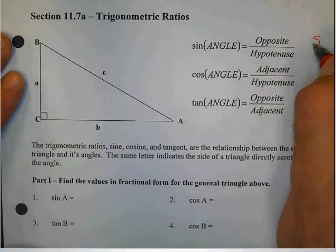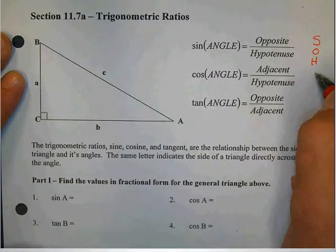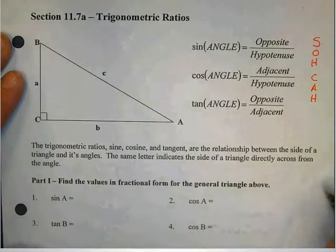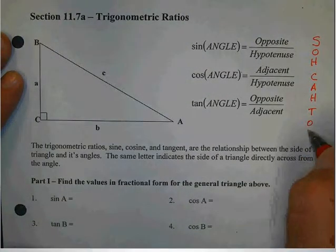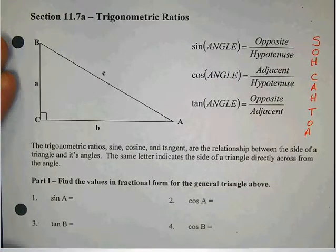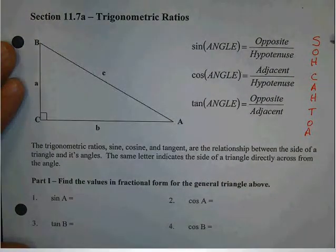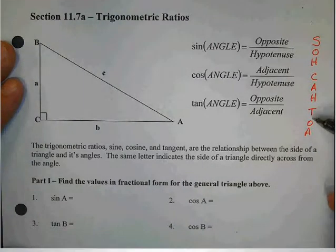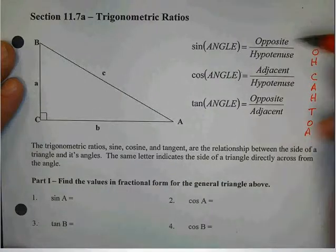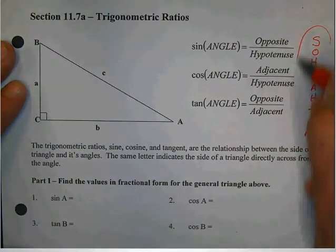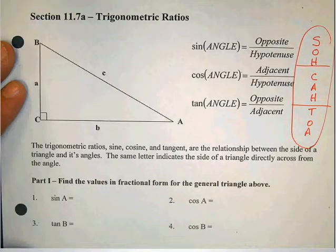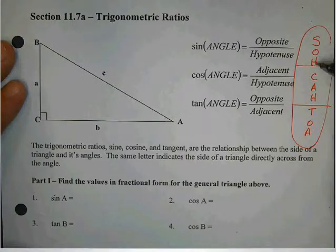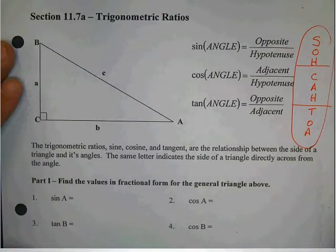SOHCAHTOA is spelled S-O-H, C-A-H, and please write that vertically down the side, and then TOA is spelled T-O-A. And let me kind of explain why we call that SOHCAHTOA. It's kind of a funny word, but it relates to the sine being the opposite over hypotenuse as a fraction. The cosine being adjacent over hypotenuse, and lastly, the tangent being the opposite over the adjacent. This is just a little acrostic that helps us to remember the three trigonometric ratios.